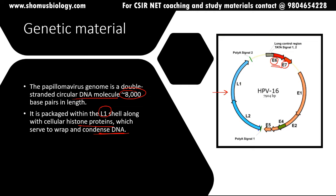Proper condensation requires histones, and this virus has its own histones. If you're asked which virus contains histones, the answer is human papilloma virus. One such example is HPV 16, which has a total of 7,904 base pairs.